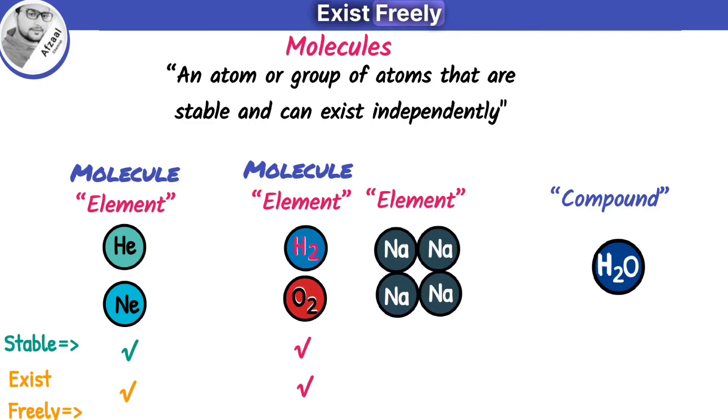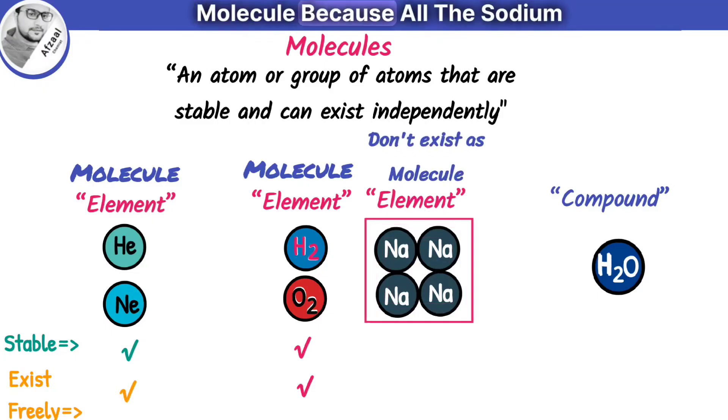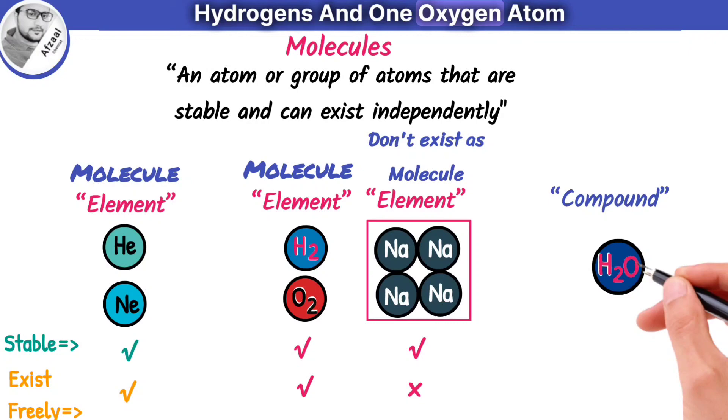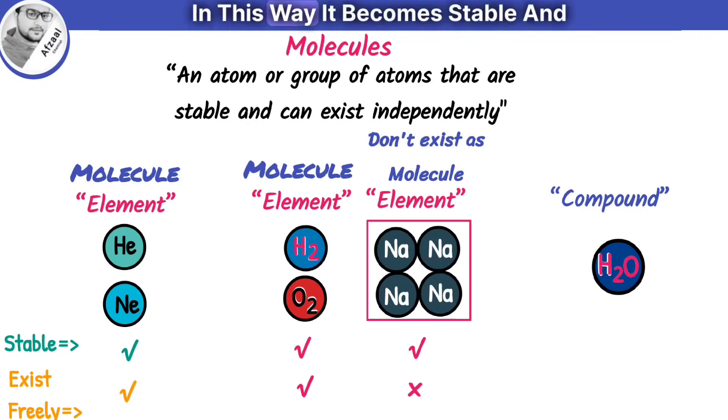Sodium metal does not exist as a molecule because all the sodium atoms combine to form a metallic bond which makes it stable but cannot exist freely. On the other hand, water is formed by combining two hydrogens and one oxygen atom. In this way, it becomes stable and exists freely, therefore known as a molecule of water.